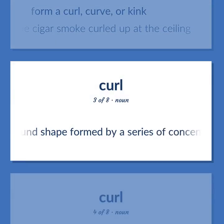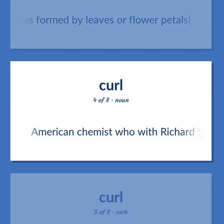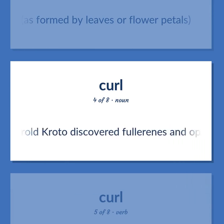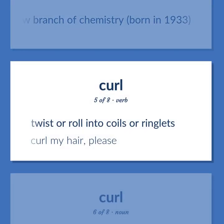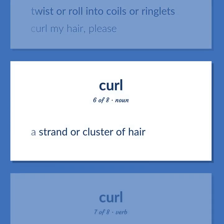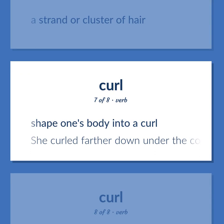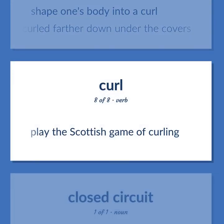A round shape formed by a series of concentric circles, as formed by leaves or flower petals. American chemist who, with Richard Smalley and Harold Croteau, discovered fullerenes and opened a new branch of chemistry, born in 1933. Twist or roll into coils or ringlets — curl my hair, please. A strand or cluster of hair. Shape one's body into a curl — she curled farther down under the covers. Play the Scottish game of curling.